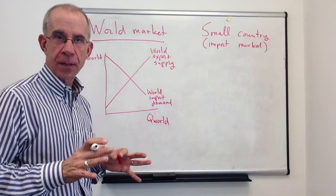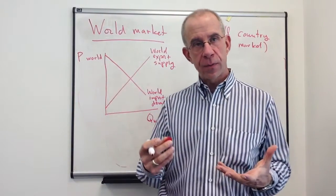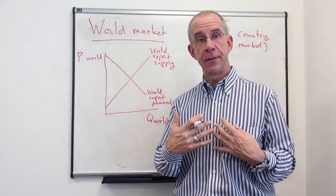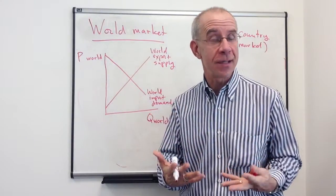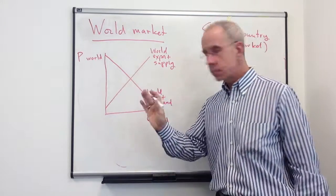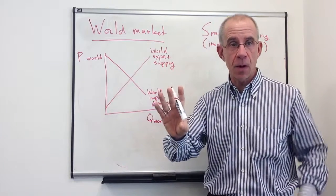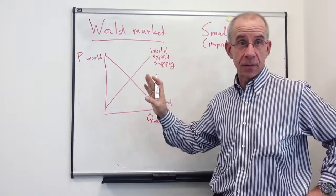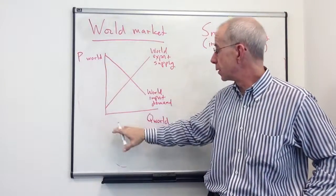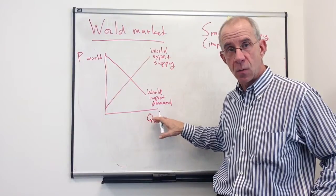In every example that we're going to be talking about, it's going to be important to understand how the international prices are determined and how the conditions inside the country that we're analyzing affect those world prices or don't. So to analyze this, I'm going to use a simple depiction for a particular market for a particular good. So what we have here is the world price of the good, the quantity of this product that's traded in the world market.